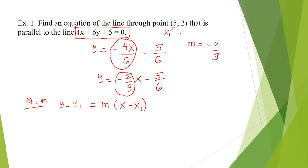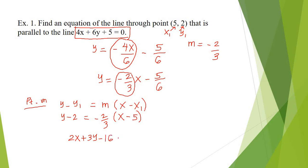The point-slope form is y minus y₁ equals m times x minus x₁. Our x₁ is 5 and our y₁ is 2. Substituting the values: y minus 2 equals negative 2/3 times (x minus 5). Simplifying, this becomes 2x plus 3y minus 16 equals 0, which is in standard form. This is our answer.